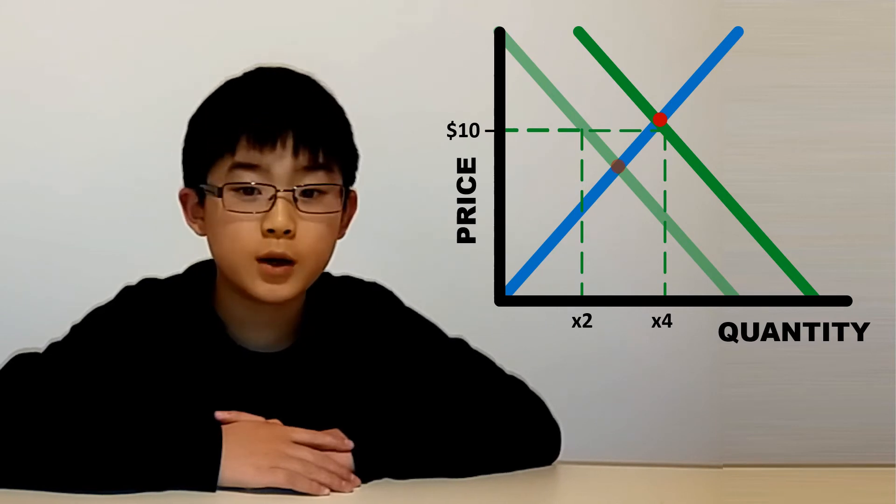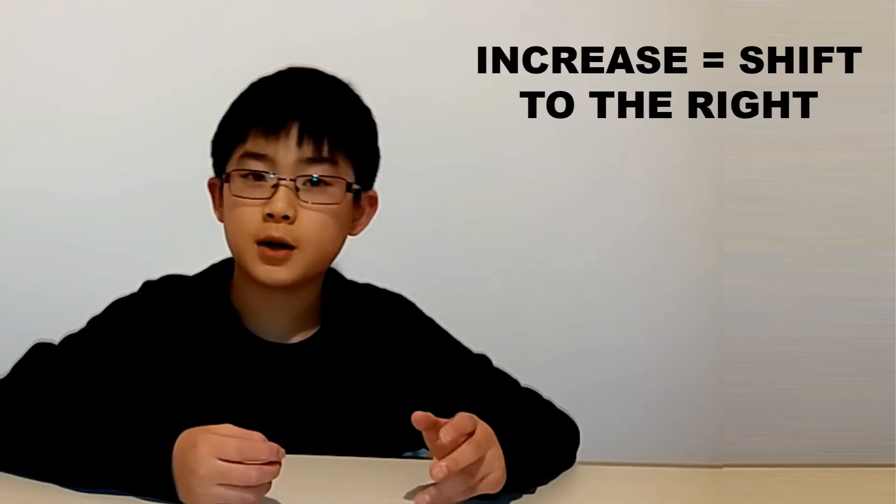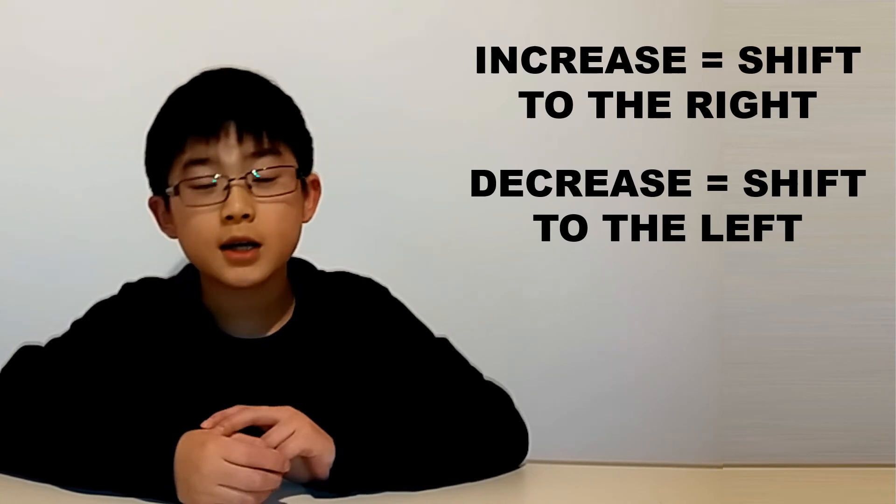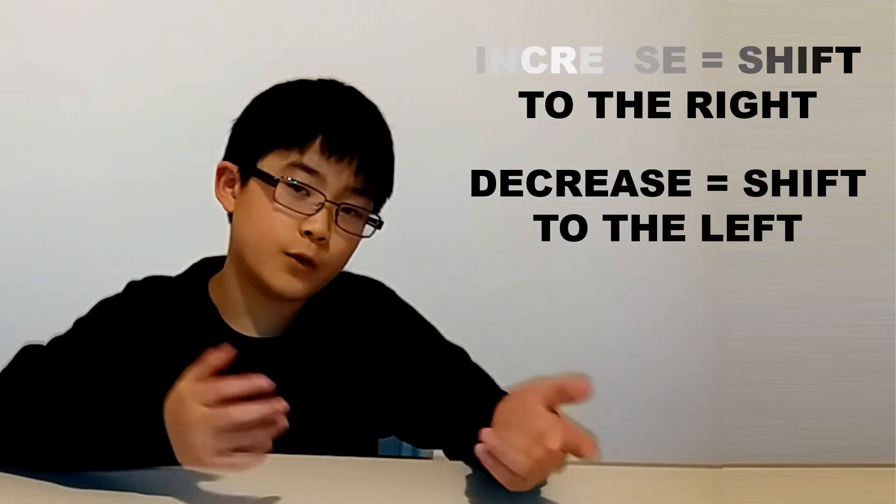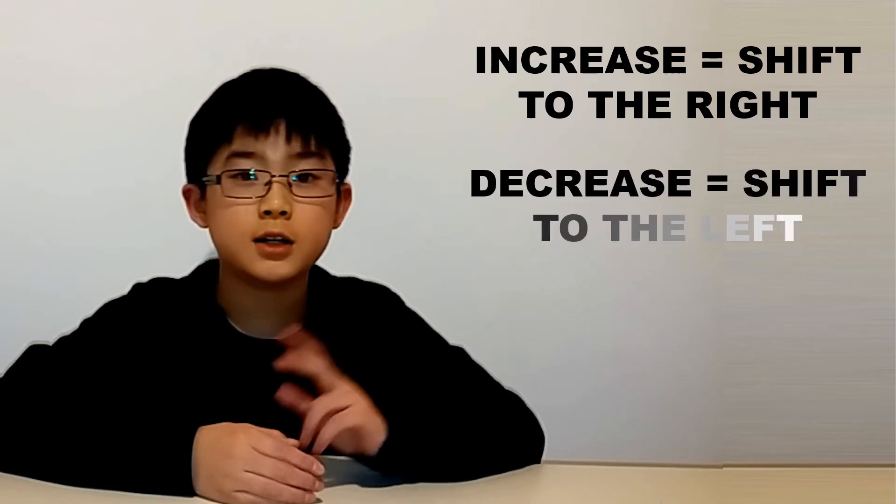In a future video, I will go over supply and demand shifts in more detail. Just remember for now that an increase in demand is shown in a shift for the demand curve to the right. A decrease in demand is shown in a shift to the left. An increase in supply is shown in a shift to the right for the supply line, and a decrease in supply is shown in a shift to the left.